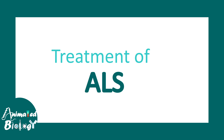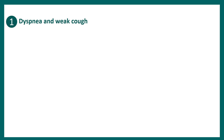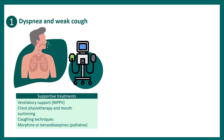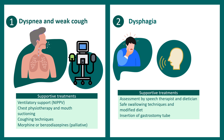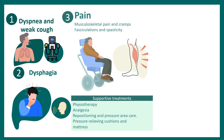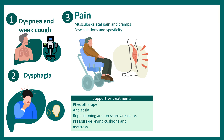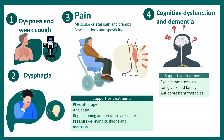ALS has no cure or definitive treatment, but supportive medications and therapy can improve quality of life. Dyspnea and weak cough can be addressed with ventilator support, chest physiotherapy, and teaching special coughing techniques. Dysphagia can be managed with speech therapy, dietitian consultation, safe swallowing technique training, modified diet, and in extreme cases insertion of a gastrostomy tube. Pain and numbness from the skeletomuscular system can be treated with physiotherapy and analgesia, while cognitive dysfunction and dementia can be addressed with antidepressant therapies and counselling.